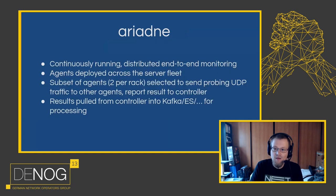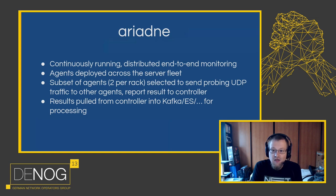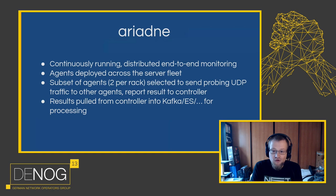The second tool is called Ariadne. Ariadne is a continuously running distributed end-to-end monitoring system. We have agents deployed across the server fleet. These agents talk to a central controller. The controller selects a subset of agents — currently two per rack — to send probing UDP traffic to other agents in other racks, and they report the results to the controller. We then pull those results into a pipeline consisting of Kafka, Elasticsearch, and Graphite for processing and analysis.